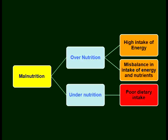Malnutrition can be categorized into two: overnutrition and undernutrition. Overnutrition means you are consuming more amount of food or more energy, and there is a disbalance in the intake of energy and nutrients — energy intake may be more but nutrient intake is less. You may be overnourished, but inside you are undernourished. Undernourishment is definitely due to poor dietary intake or poor nutrient intake.